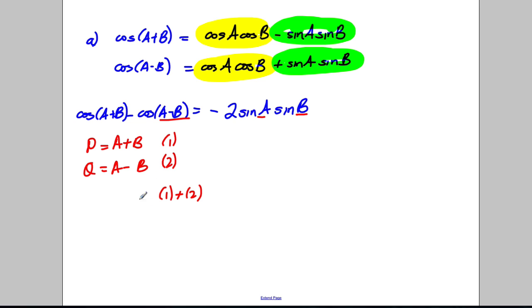Let's replace A and B. If I add these equations together, 1 add 2, I will get that 2A is equal to P+Q, so A is (P+Q)/2. And if I took them away, 1 take away 2, I will get that 2B equals P-Q, so B is (P-Q)/2.